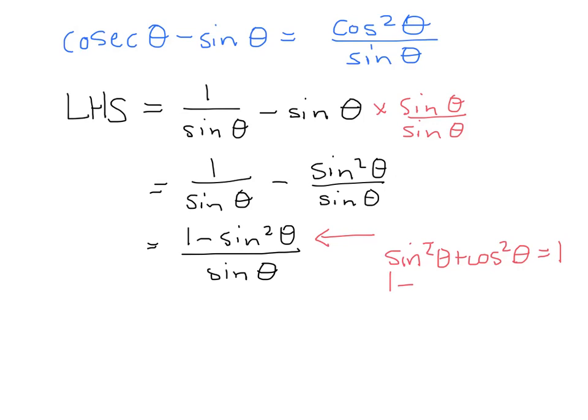Rearranging that, we just get 1 minus sine squared of an angle is equal to cos squared of an angle. Simple rearrangement.